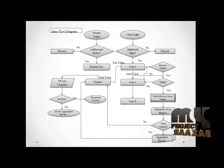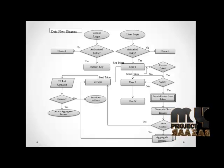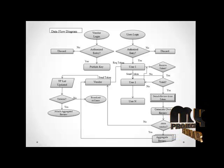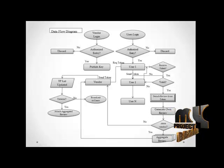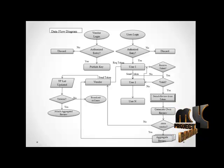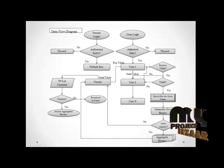After the successful entry of the vendor, you can generate the key pairs with the combination of a public key and a private key. Then he can publish only the public key to all successfully logged in users. The first user will start requesting for a token, and with the help of this token only, he can submit his own service review to the vendor.